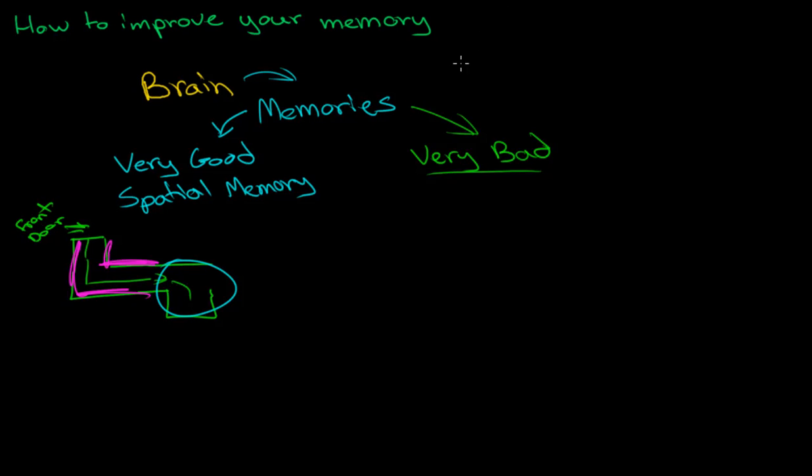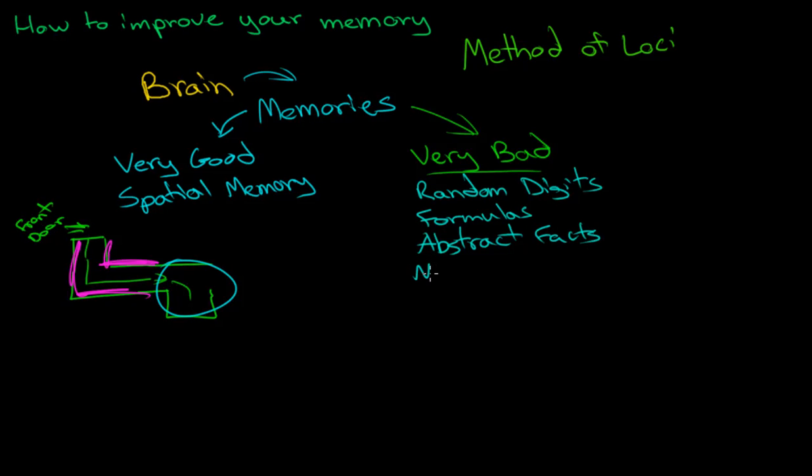In this video, I would like to introduce a mnemonic device called the method of loci. Loci refers to the locations. All we do is we take very bad unstructured information types, like random numbers, phone numbers, random digits, formulas, abstract facts, names, maybe the capital cities of every country in the world.